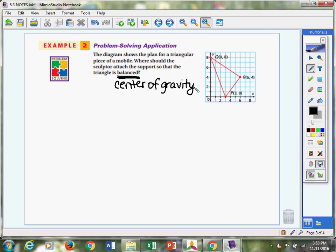And we need to figure out the position of that point. We are looking for the coordinates. They are asking us where should the sculptor attach the support so that the triangle is balanced. We're not really looking for length of a side or not necessarily looking for that.